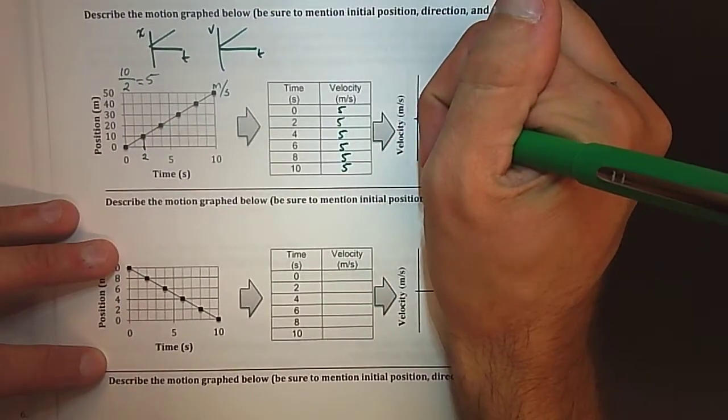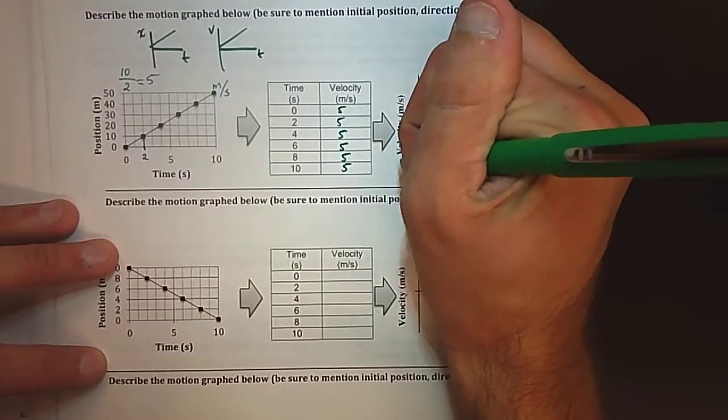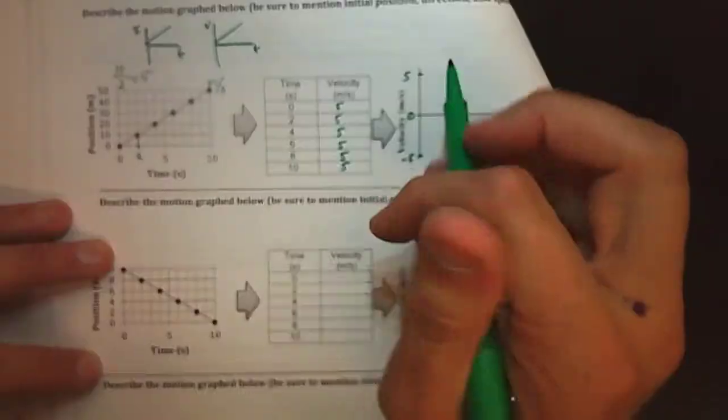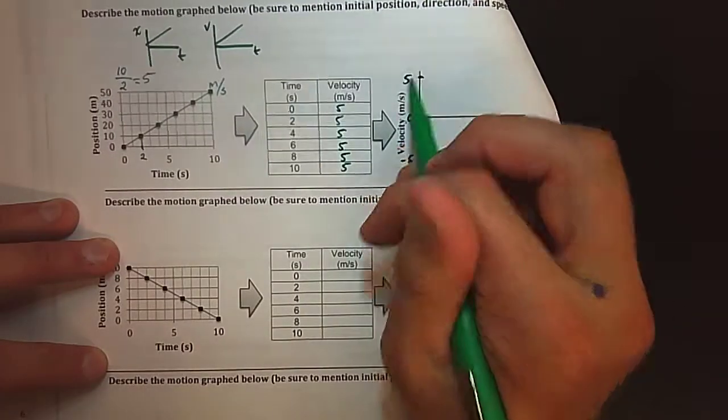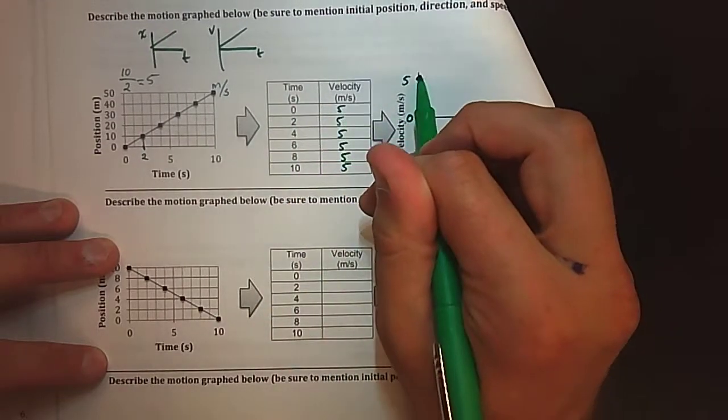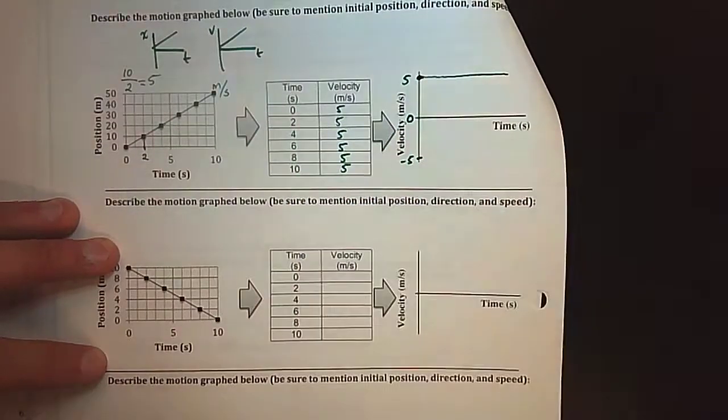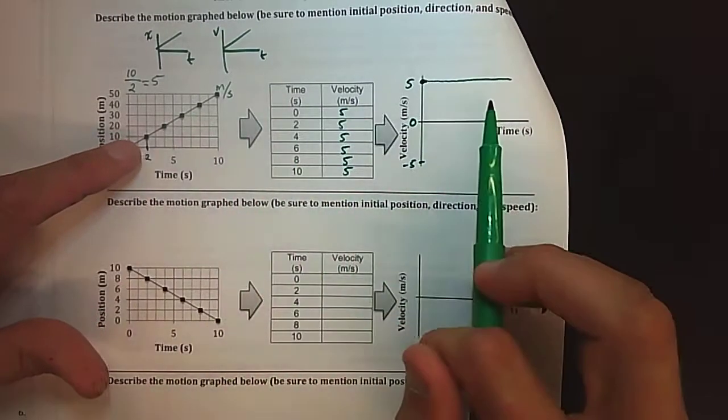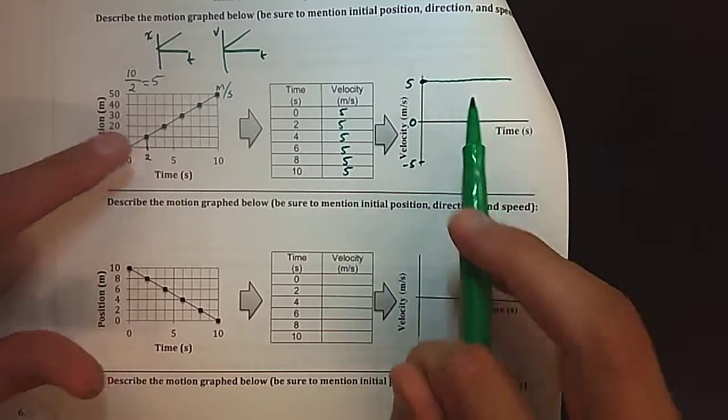If I translate that over to my velocity versus time graph, here's zero, this could be negative five, this could be five. At time zero my velocity is five and as time increases my velocity stays at five, so it's just a horizontal line. Notice these graphs are talking about the same object doing the exact same thing but since we have different types of graphs they're going to look different.